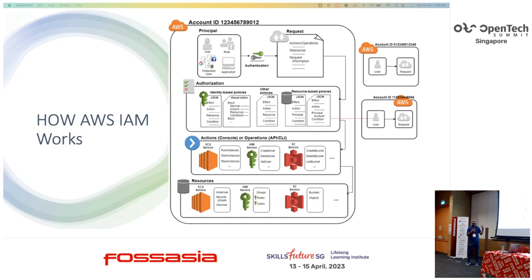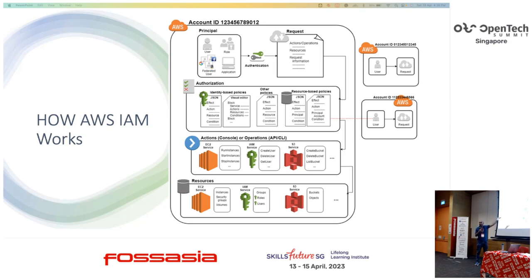Next part is: what action are you going to perform? Are you going to create an EC2 instance? Are you going to create a custom RDS? Do you have the privileges? When you request to create an EC2 instance, it will check whether you have the policies to perform that action.